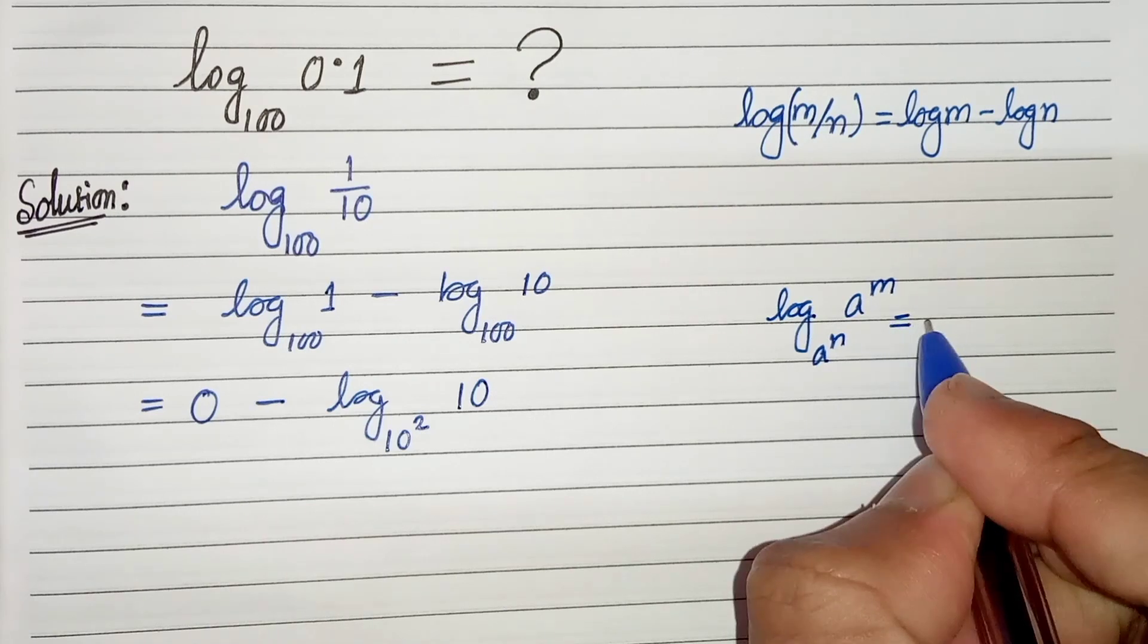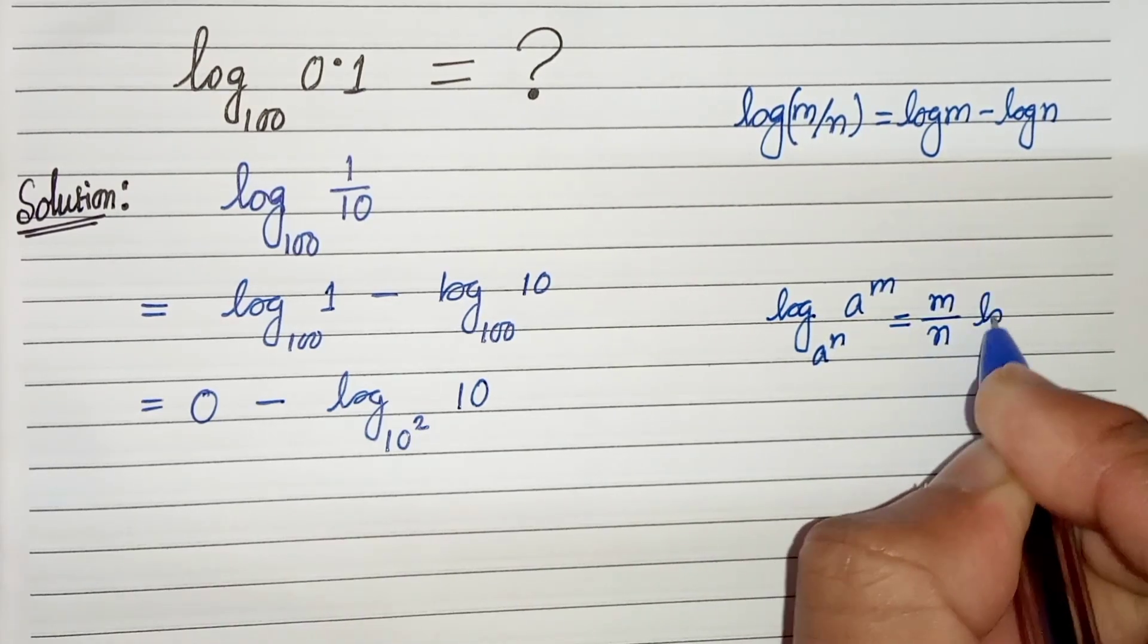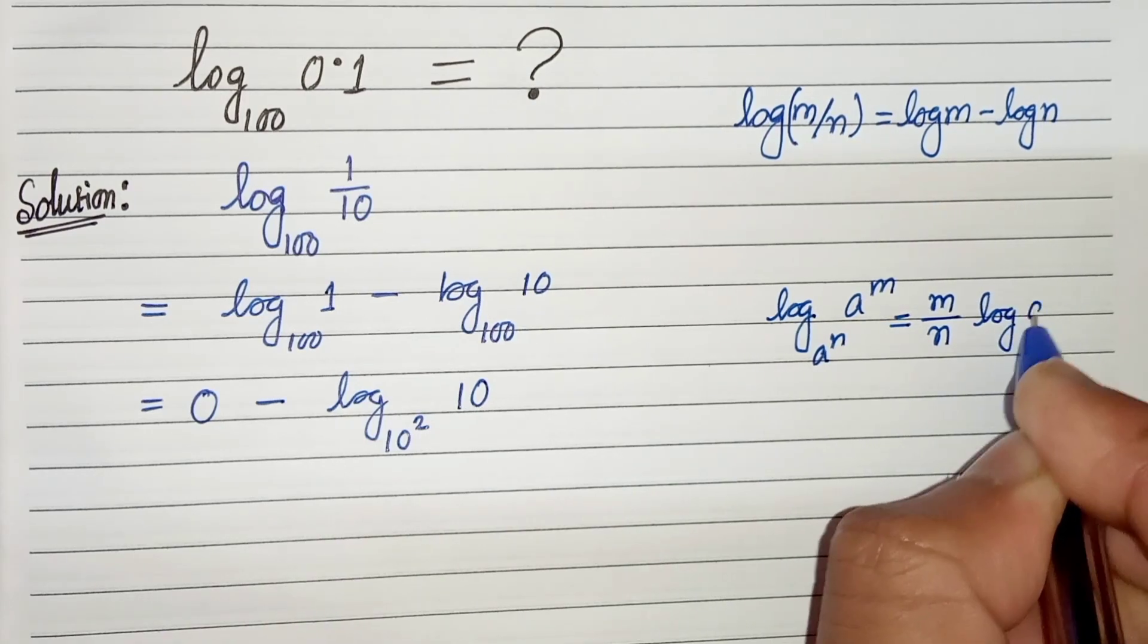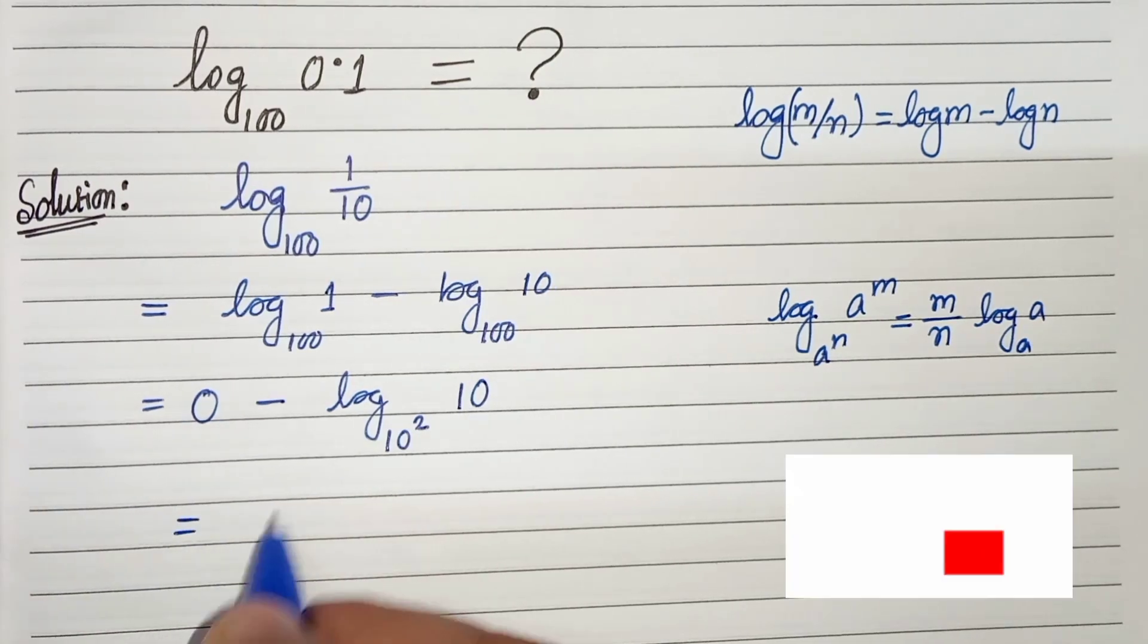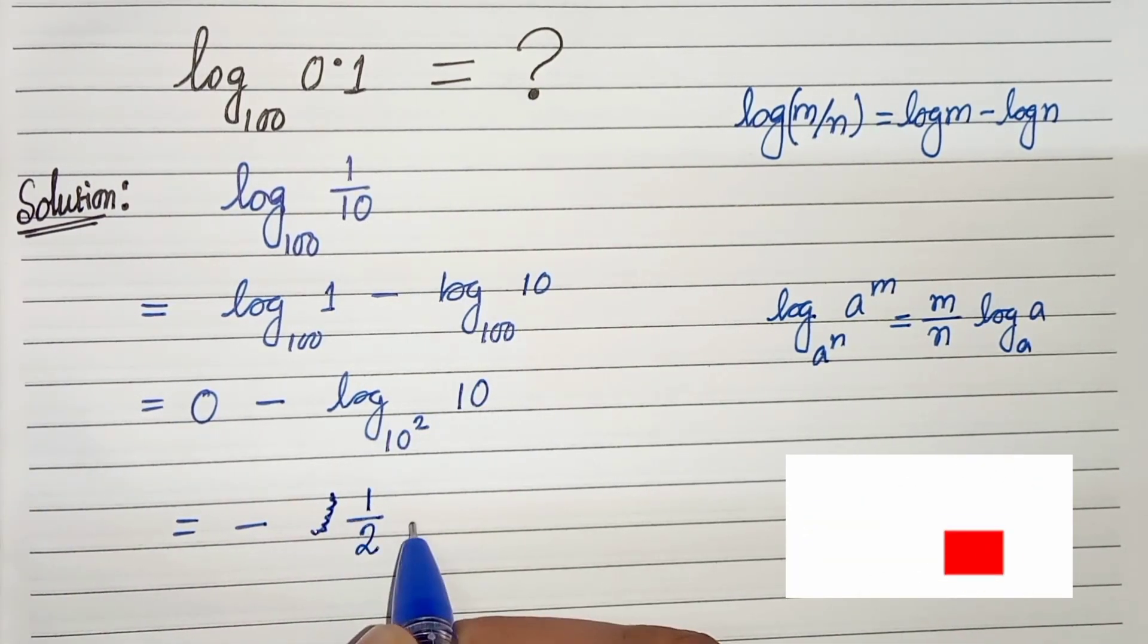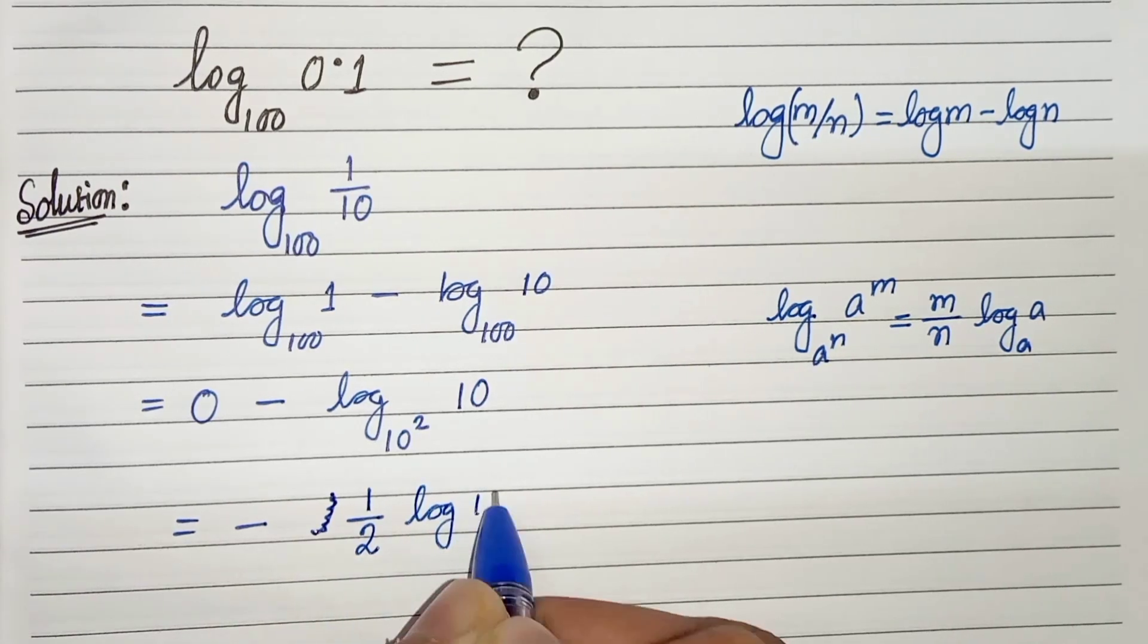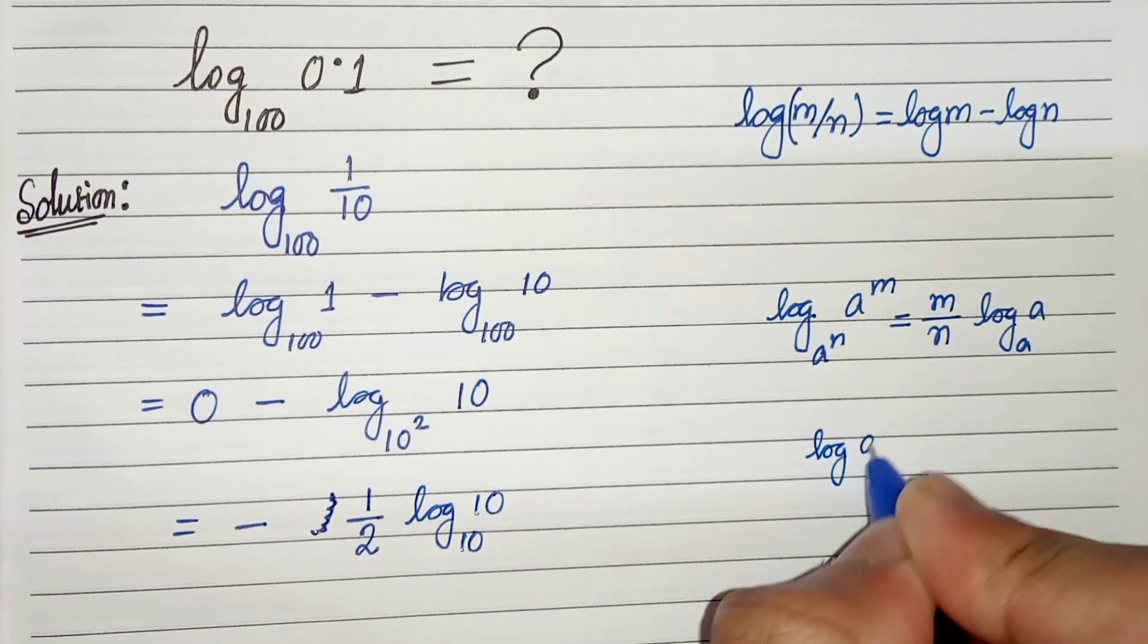We will get minus 1 by 2 log of 10 base 10. And again we know that log of a base a is 1, that means log of 10 base 10 is 1.